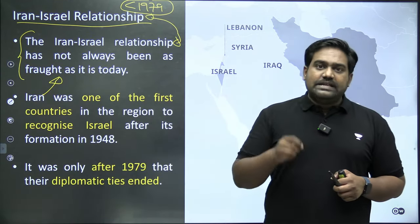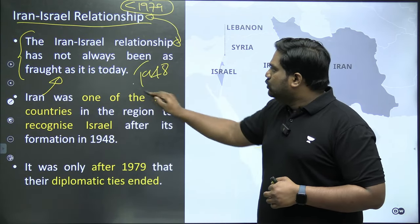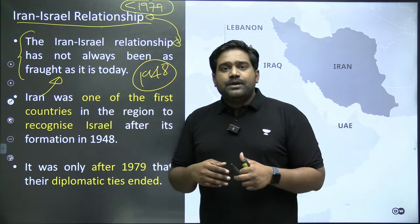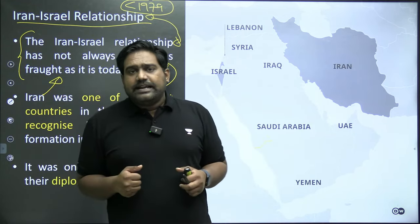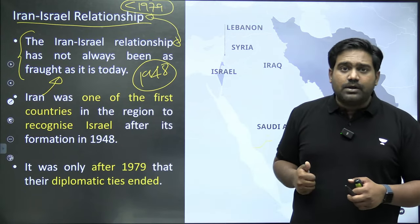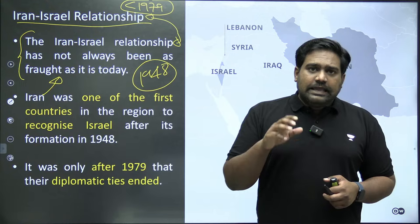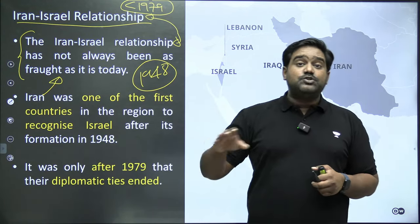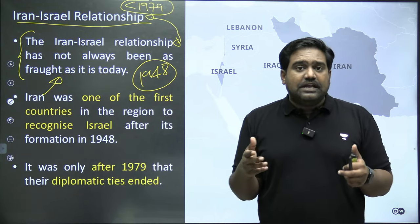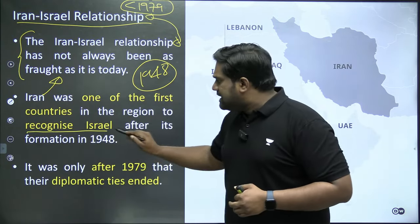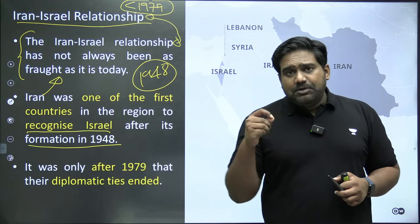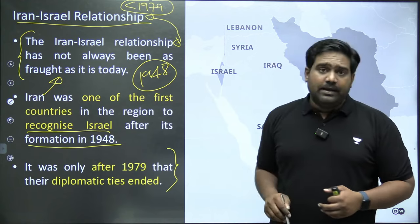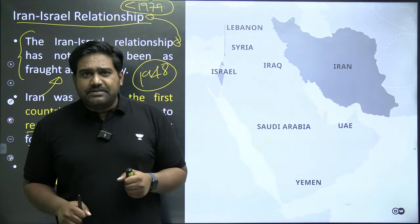Israel had declared unilateral independence in 1948, violating the UN's two-state plan. As other Arab countries stood for the rights of Palestinians and attacked Israel — resulting in the first Arab-Israel war — Iran was an exception. Iran stayed away from this conflict, did not side with the other Islamic nations and Arab countries, and eventually recognized Israel after its formation. It went on to set up diplomatic relations and even had a strong economic relationship, with Iran being one of the top oil suppliers to Israel from the 1950s to the 1970s.